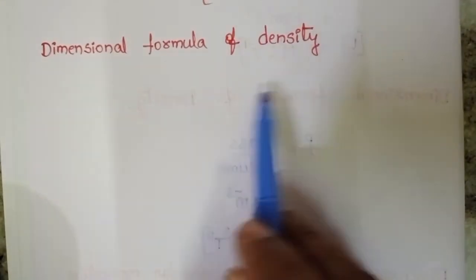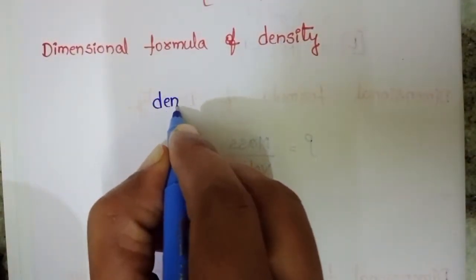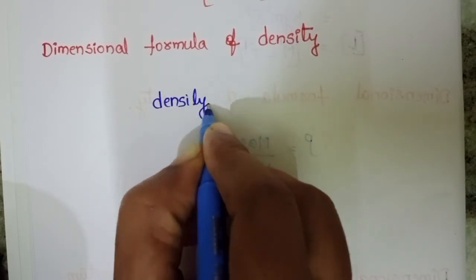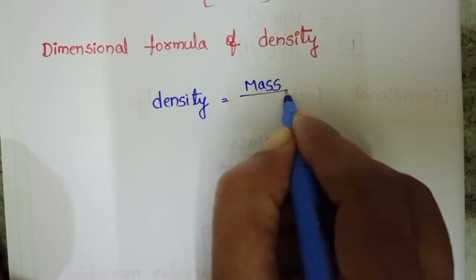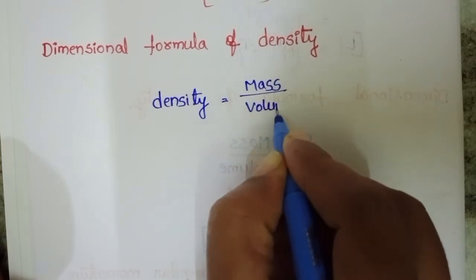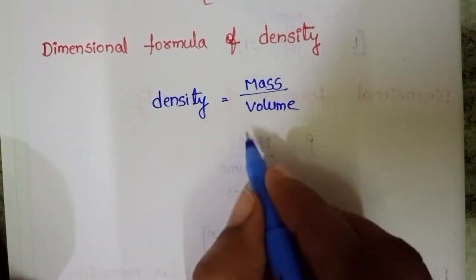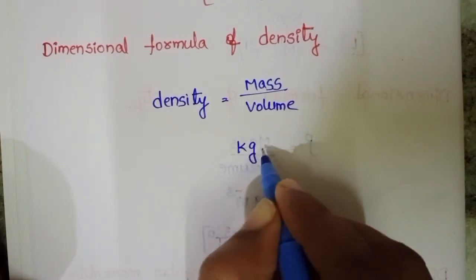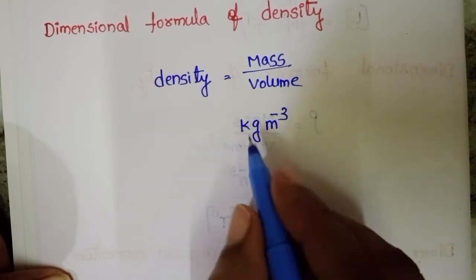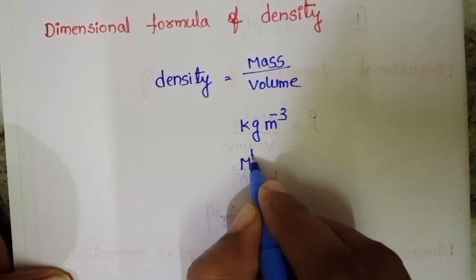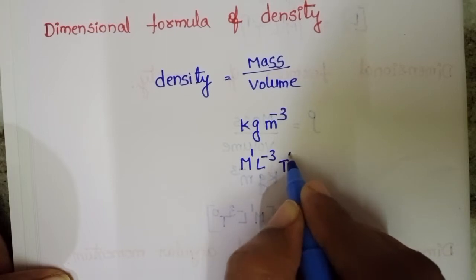The dimensional formula of density is derived from its definition: density equals mass divided by volume. The SI unit of density is kg per meter cube. The dimensional formula of density is M power 1, L power minus 3, T power 0.